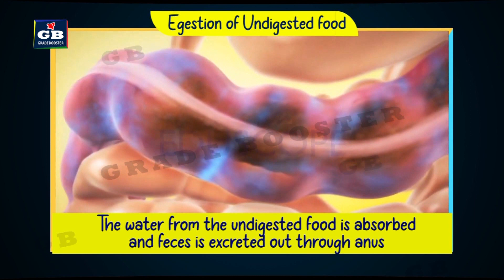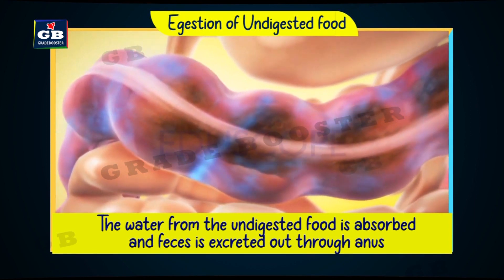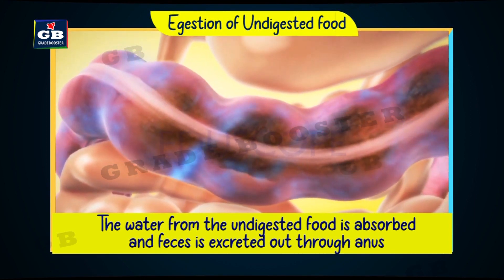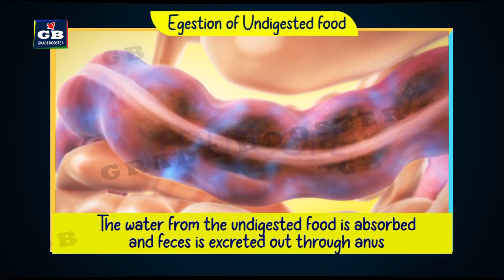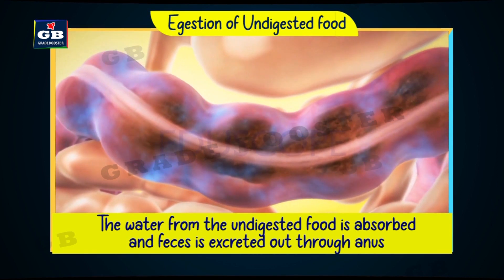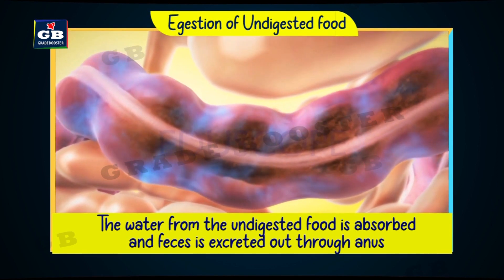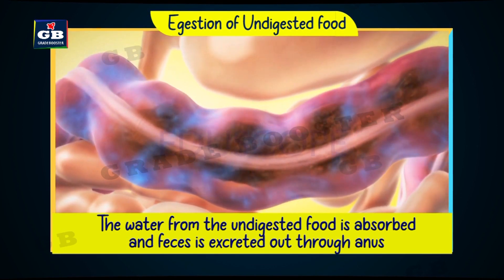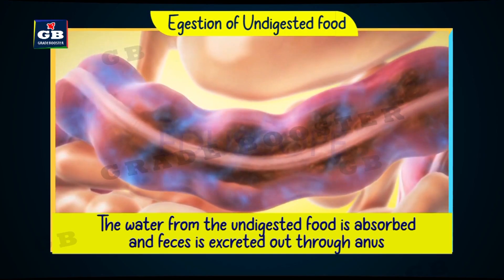Undigested food enters the large intestine. The water present in this undigested food is absorbed into the blood. The remaining undigested waste is excreted out through the anus.